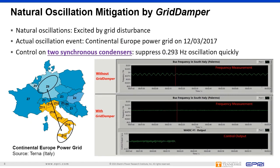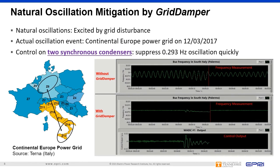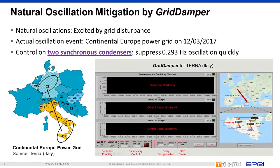The video on the right compares oscillation dynamics with and without Grid Damper. Without Grid Damper, the oscillation kept growing. By contrast, when Grid Damper is in service, the oscillation settled quickly in three seconds with a magnitude close to zero.